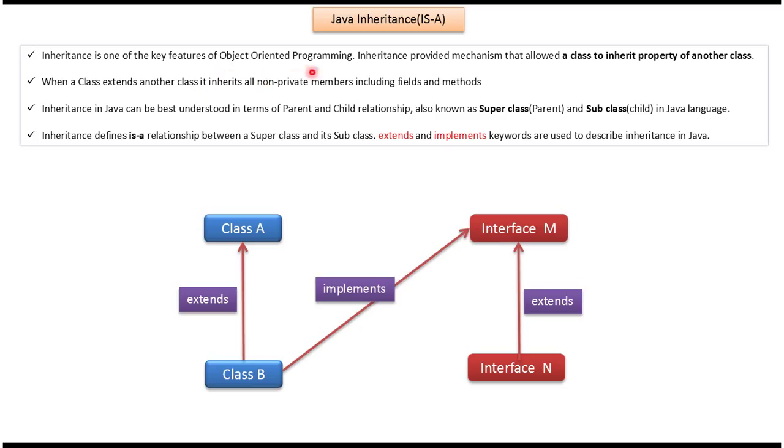Here you can see some of the definitions of Java inheritance. Inheritance is one of the key features in object-oriented programming. Inheritance provides a mechanism that allows a class to inherit property of another class.